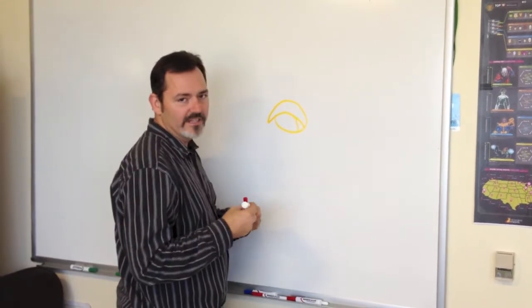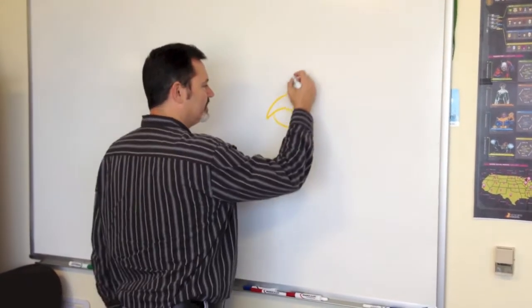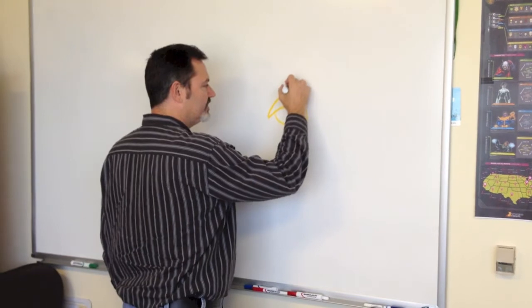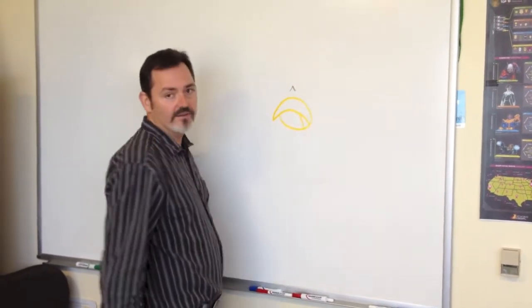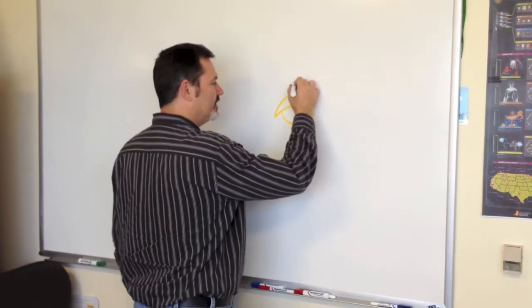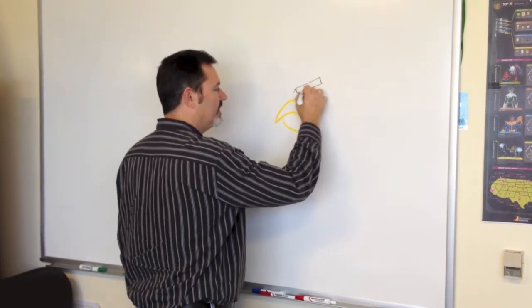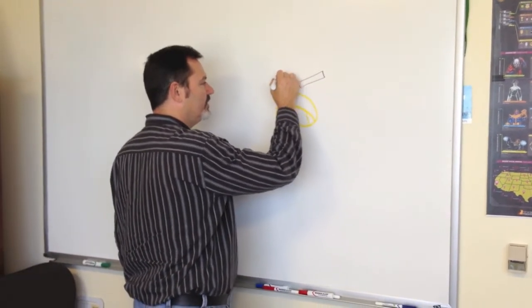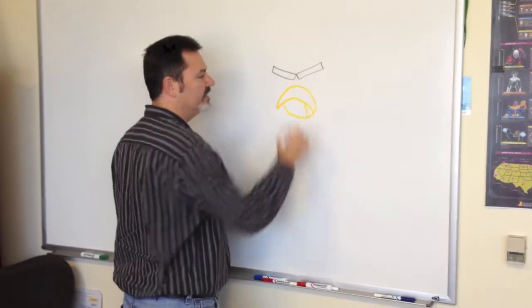Now right above that, the thing that makes him the angry bird is his eyes. So right above here, just barely above it, we're going to make a little upside down arrow. And that is going to be his eyebrows. So we draw two rectangles right on the top to be his eyebrows.